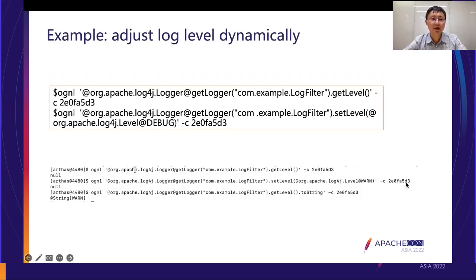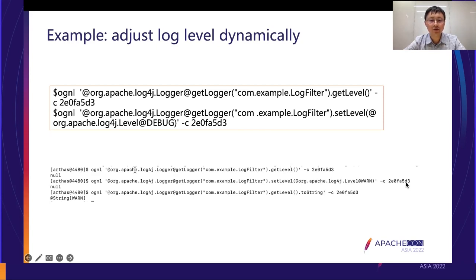Next, here's how to adjust log levels dynamically. Sometimes you want to turn on debug logging but traditionally you'd have to restart the application. With Arthas, you use an OGNL expression: for example, calling Log4j's getLogger() to get the current level, then calling setLevel() to change it to debug. It's quite simple and requires no restart.